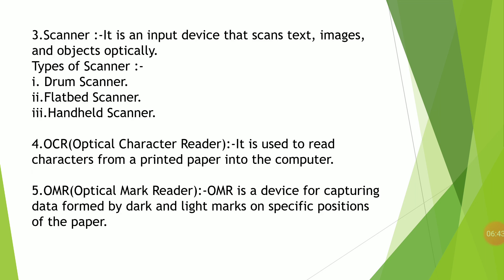The next input device is the scanner. It is an input device that scans text, images, and objects optically. The scanned data is then converted into a digital image and displayed on a computer system. Digital image means the data is converted into binary codes and then displayed on the screen. Types of scanners include drum scanner, flatbed scanner, and handheld scanner.